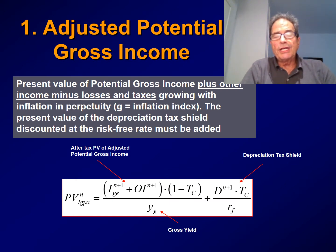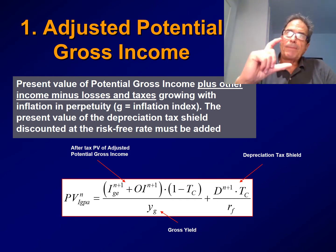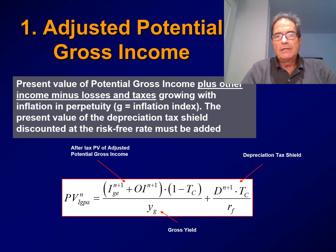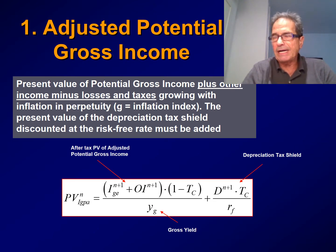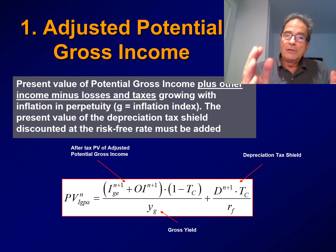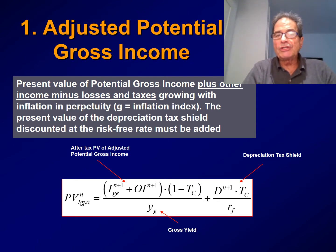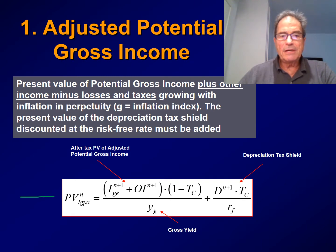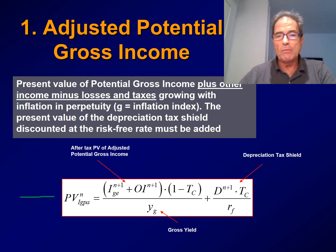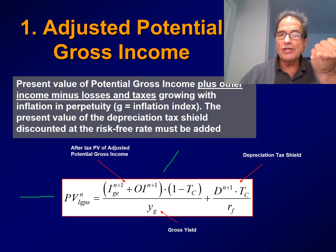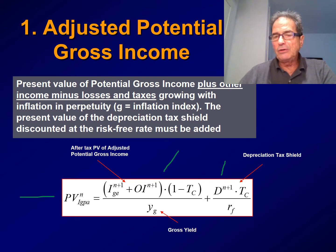The first component is adjusted potential gross income. The present value of this component at the end of the horizon is represented by the potential gross income plus other income minus losses — basically vacancies — and taxes, and this grows with inflation in perpetuity. To this present value, we should add the present value of the depreciation tax shield, which is discounted at the risk-free rate. The formula has two terms: the first corresponds to adjusted gross potential income discounted at the gross yield, and the second is simply the present value of the depreciation tax shield.